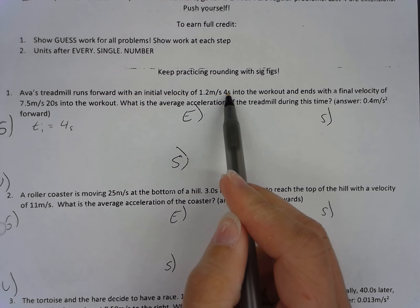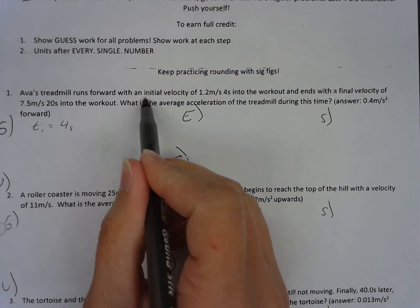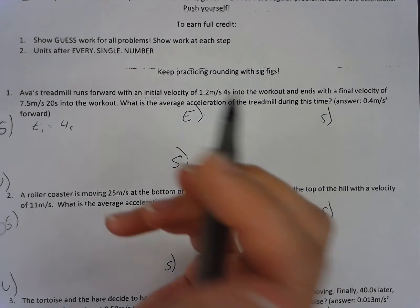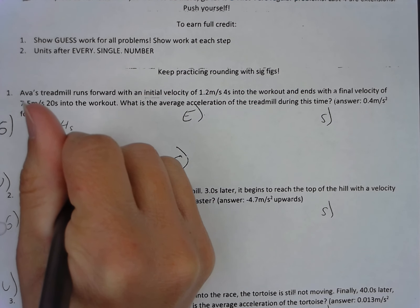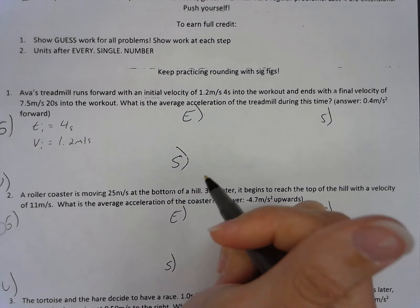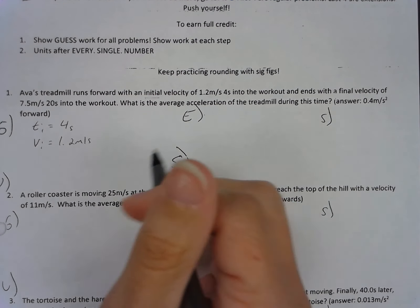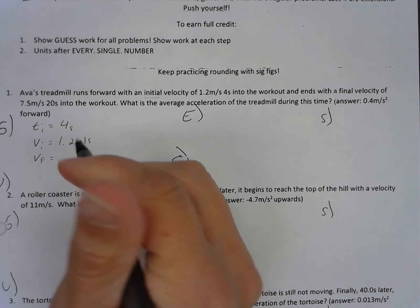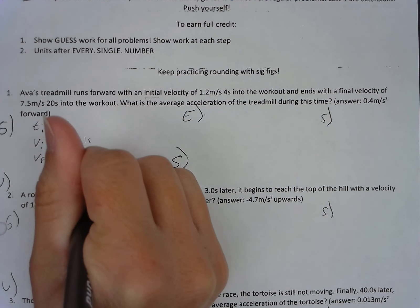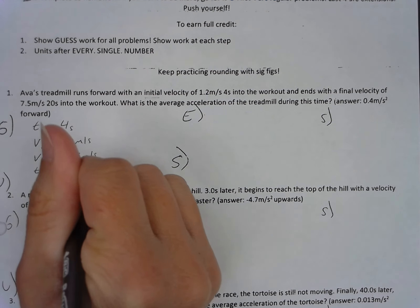Now, at 4 seconds, we have an initial velocity of 1.2 meters per second. You are also given this keyword initial. So my Vi velocity initial is 1.2 meters per second. Final velocity of 7.5 meters per second. So velocity final, use that subscript F for that, 7.5 meters per second. And then my Tf final time is 20 seconds.